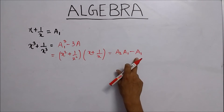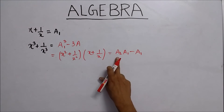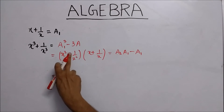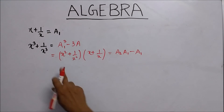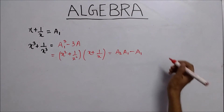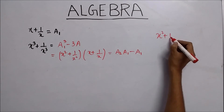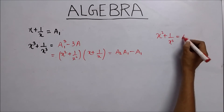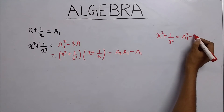Here, a1 is the value of x plus 1 upon x. And a2 is the value of x squared plus 1 upon x squared. You already know that x squared plus 1 upon x squared equals a1 squared minus 2.